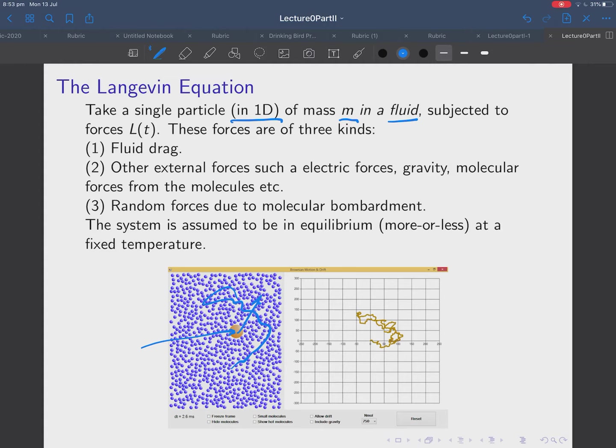But, it's also subject, and this is the most important thing here, to random molecular forces. Random molecular bombardments. It's constantly being hit by these other molecules. Okay. So, this third one is really the contribution which Langevin makes. Okay. And, we're going to assume the system's more or less in equilibrium at a fixed temperature. So, we're going to fix the temperature. And, it's more or less in an equilibrium state.